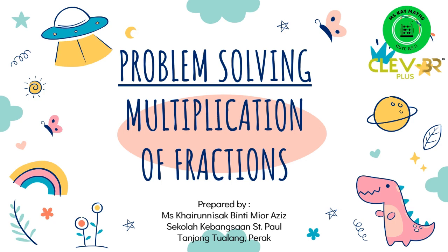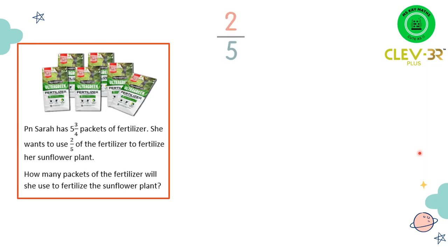So let's not waste any more time. Let's view the first question. Okay, for the first question, we have 2 over 5 times 5, 3 over 4.